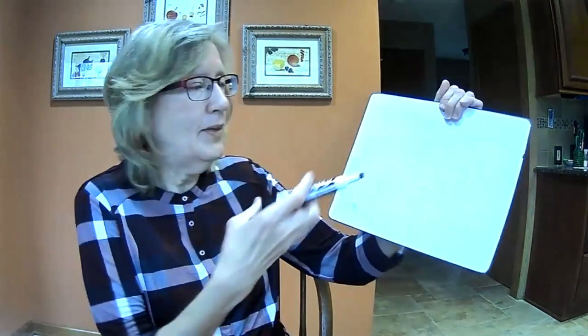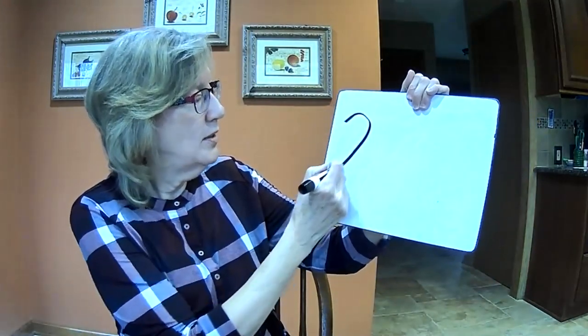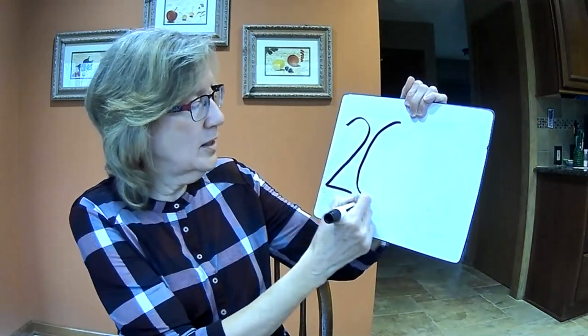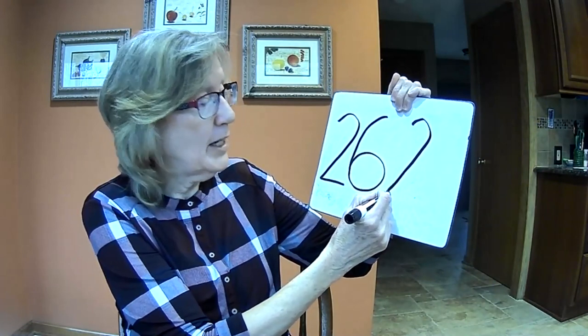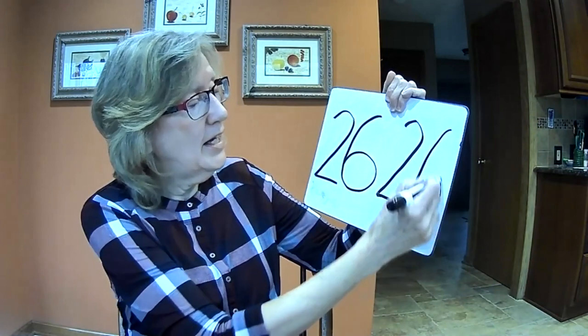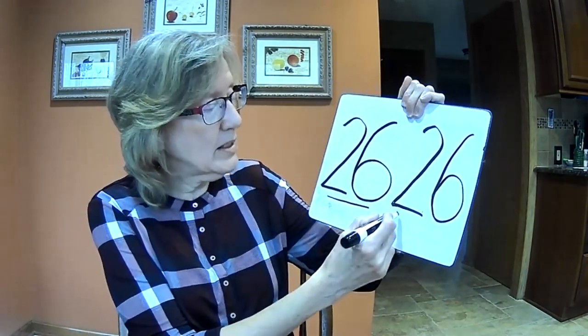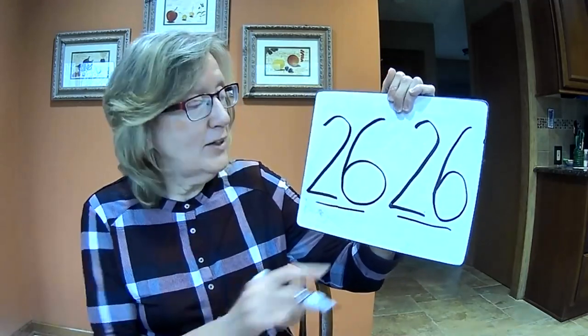To get 26, we have to do them both at the same time — we do our two first, and then our six. Make a hook, give it a shoe — that's the way to make a two. Then a curved line and a circle mix — that's the way to make a six. So I have 26 written twice on my whiteboard.